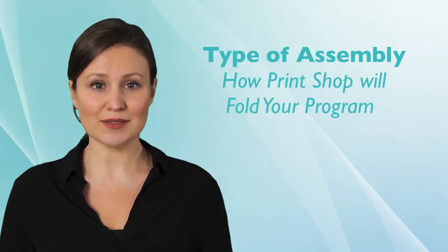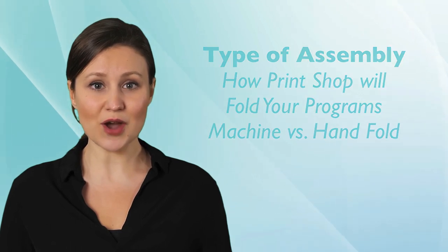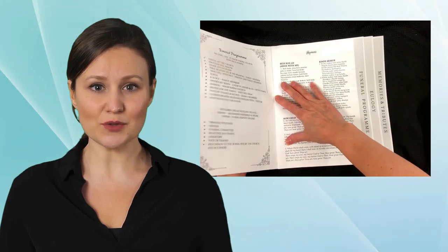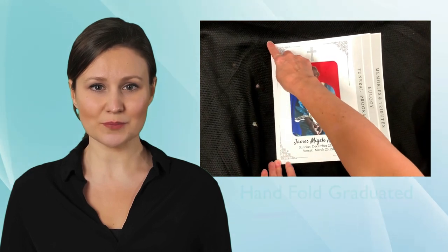The type of assembly means how the print shop will fold your programs. The most common fold is the bifold that folds directly in half. More complicated ones include trifolds, gatefolds, or graduated funeral programs. Programs that require hand-folding versus machine folding will be more costly due to the manual work involved.